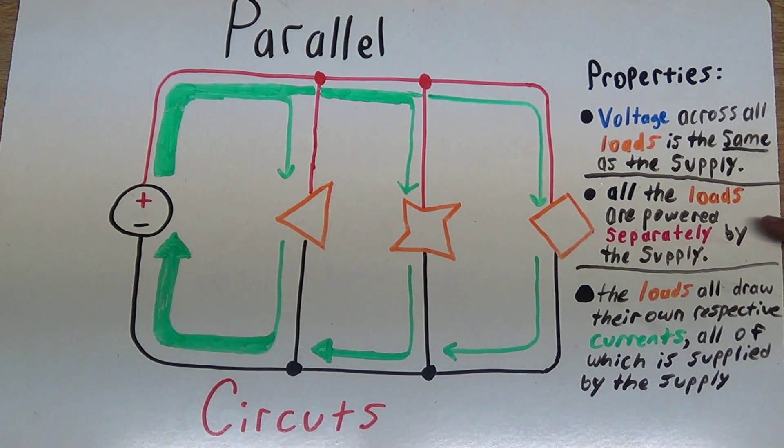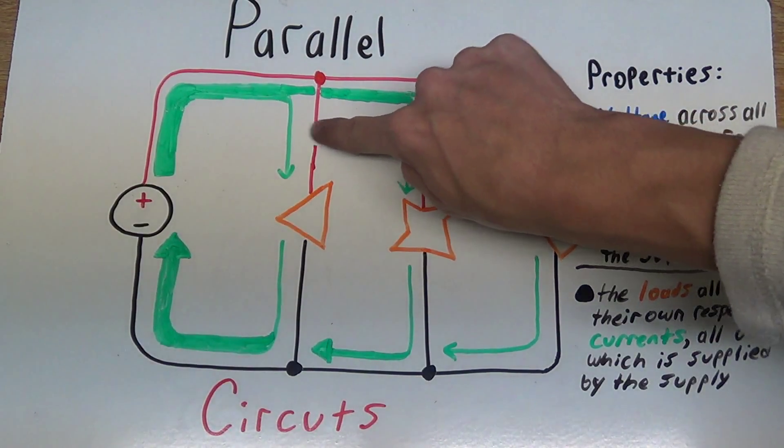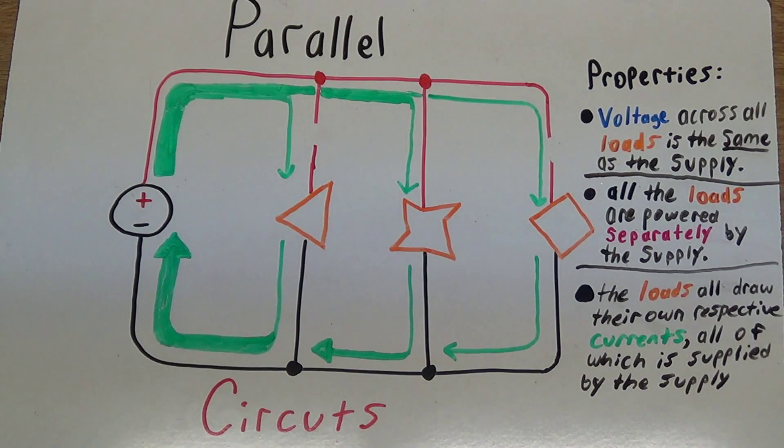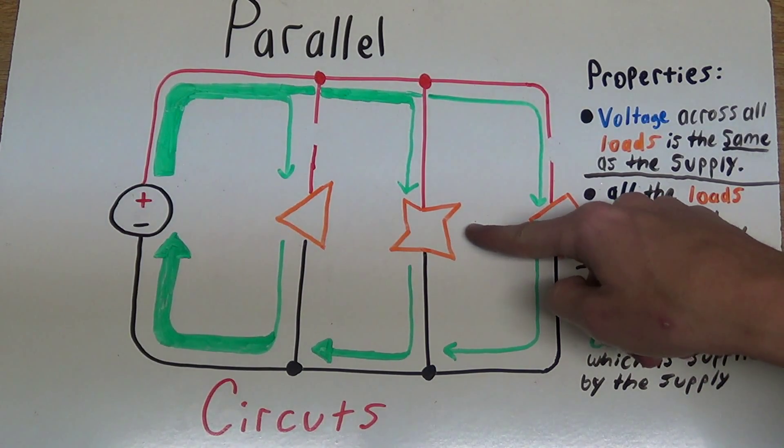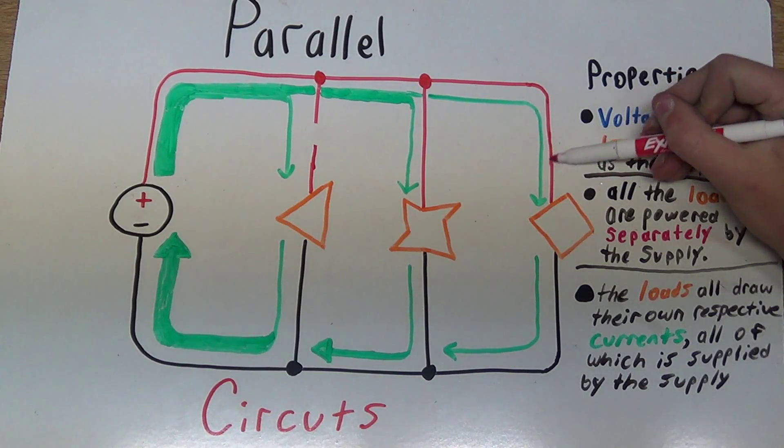So the next property of parallel circuits is that because all the circuits are being powered individually by the power supply, if we were to break the connection to any one of these parts, or any two of these parts, there'll still be current flowing through the remaining parts, and of course if we recreate the connection, current will start to flow again.